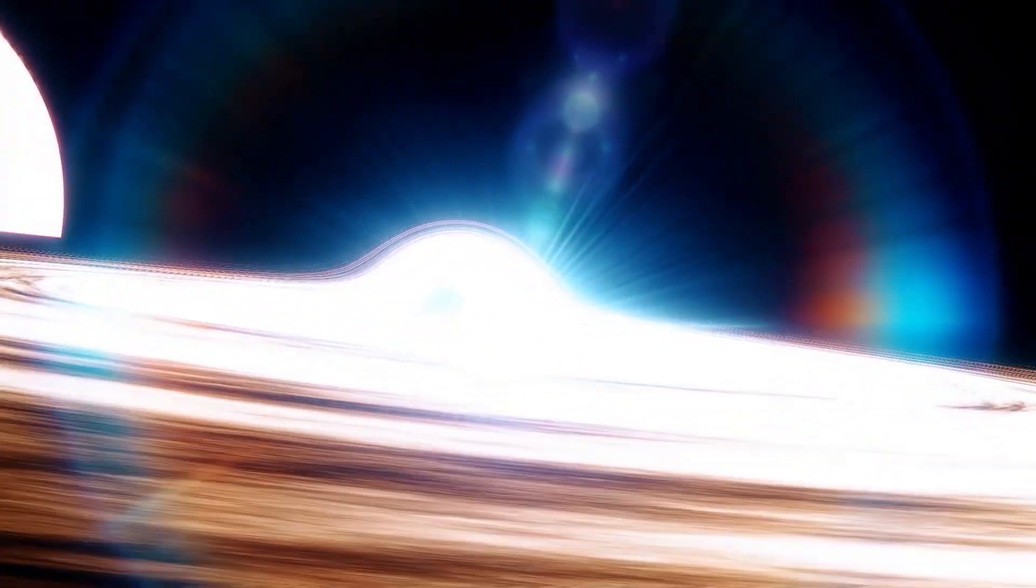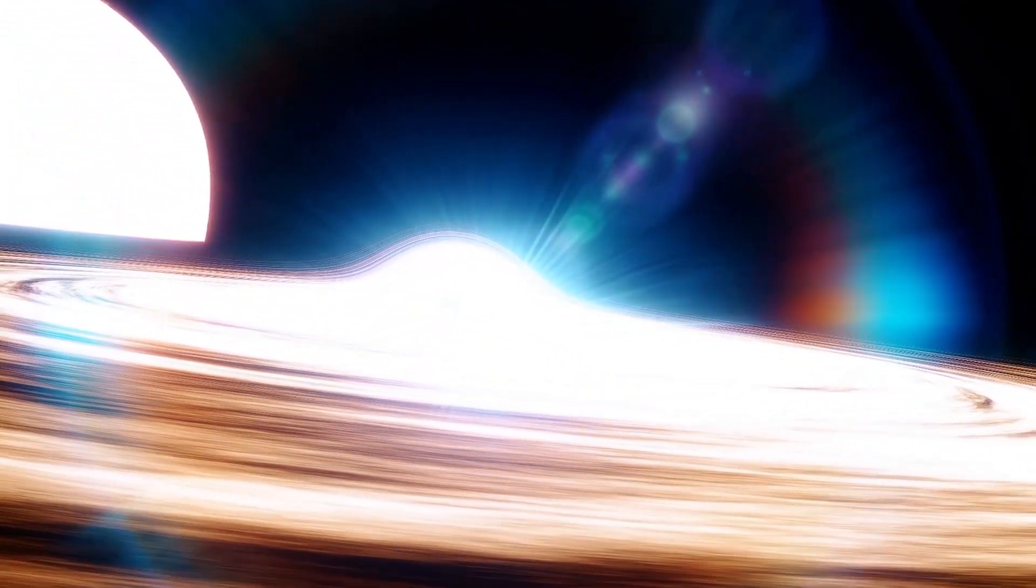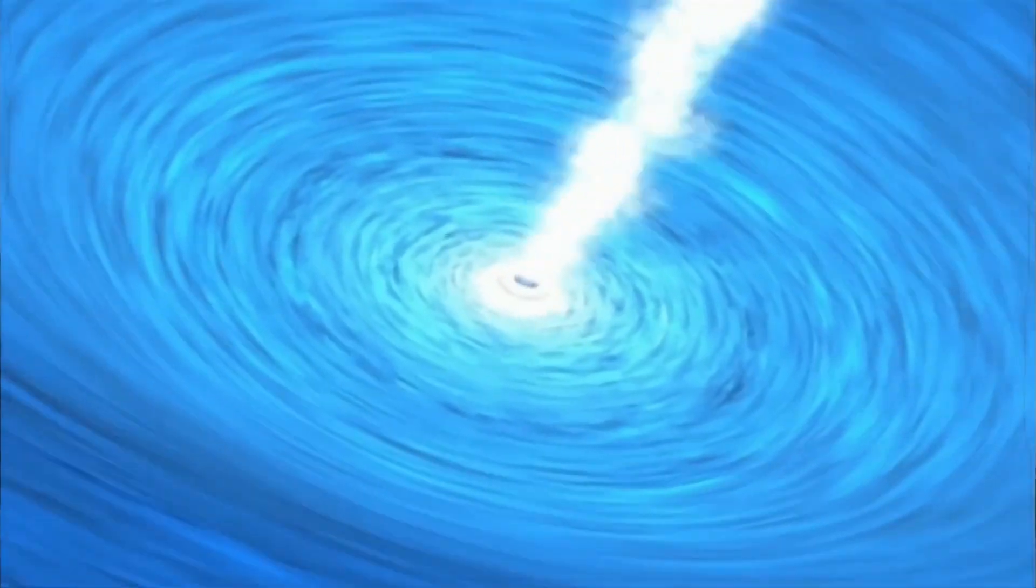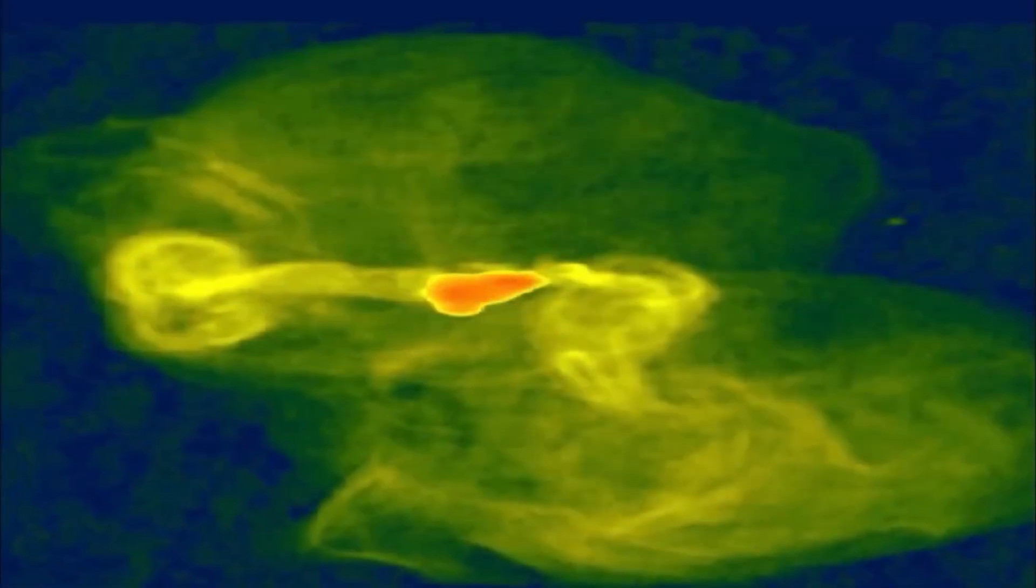The distinguishing feature of a white hole is that it only allows matter and energy to flow outward. Nothing can cross its event horizon from the outside to the inside, which distinguishes it primarily from black holes.